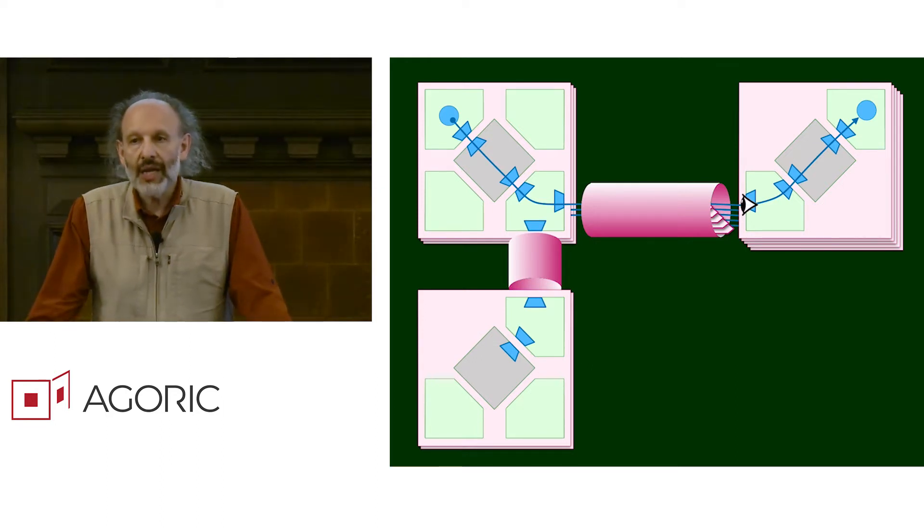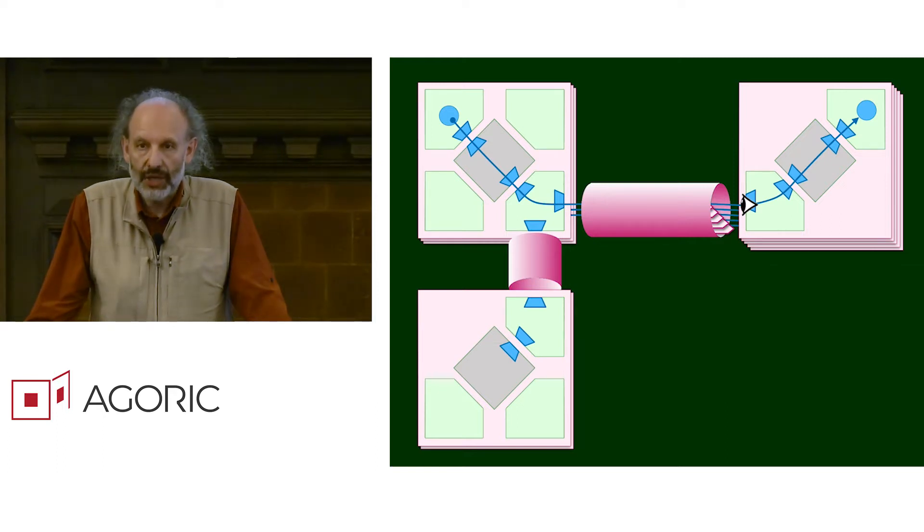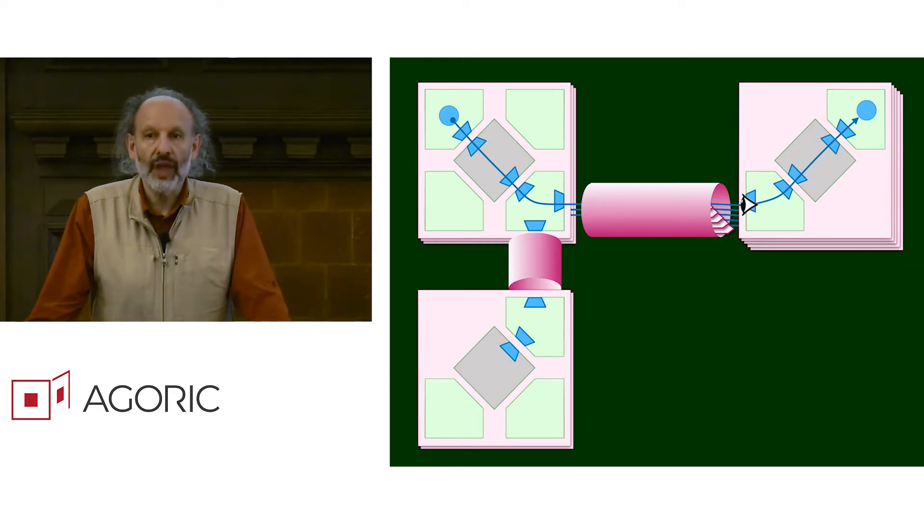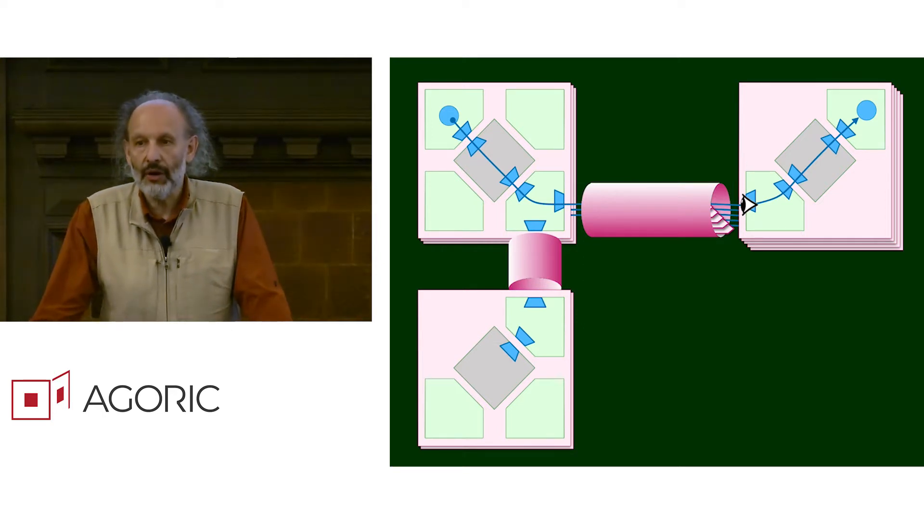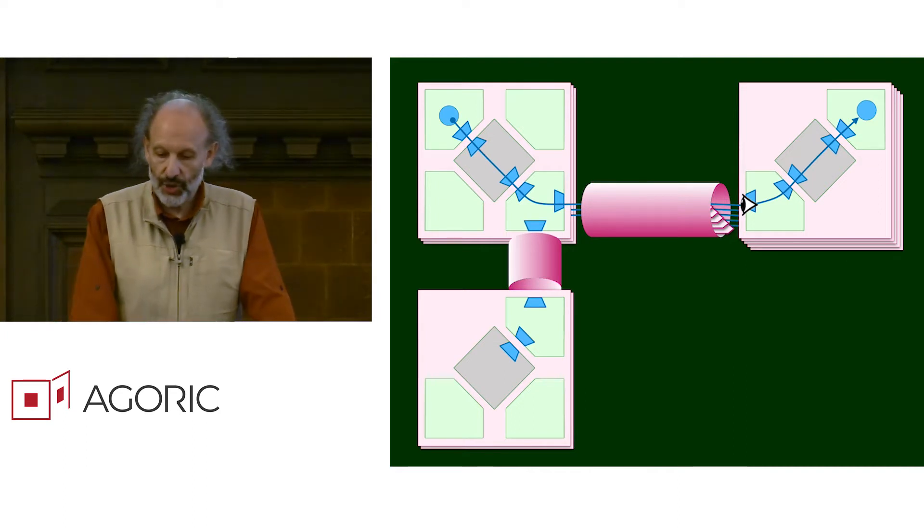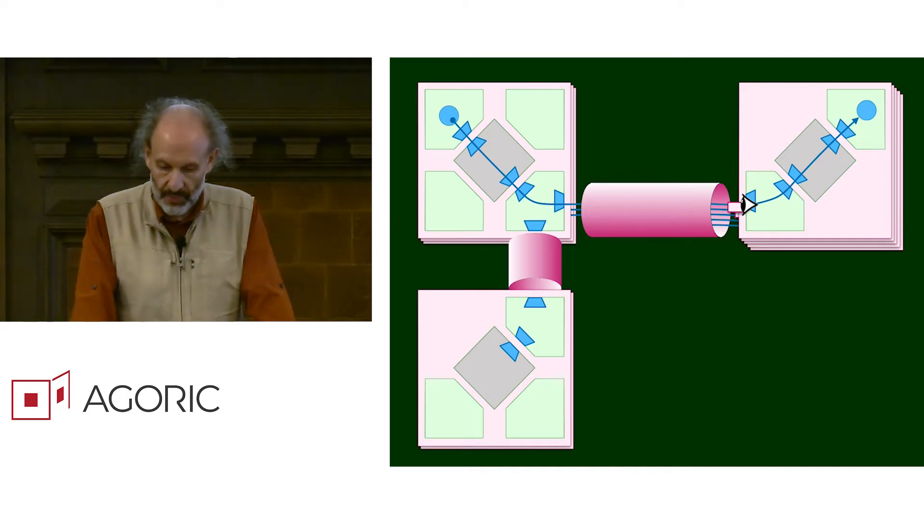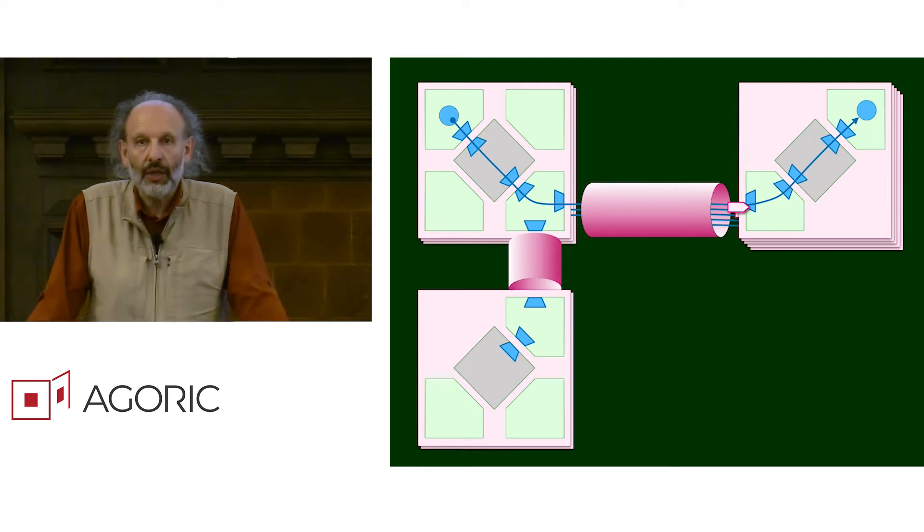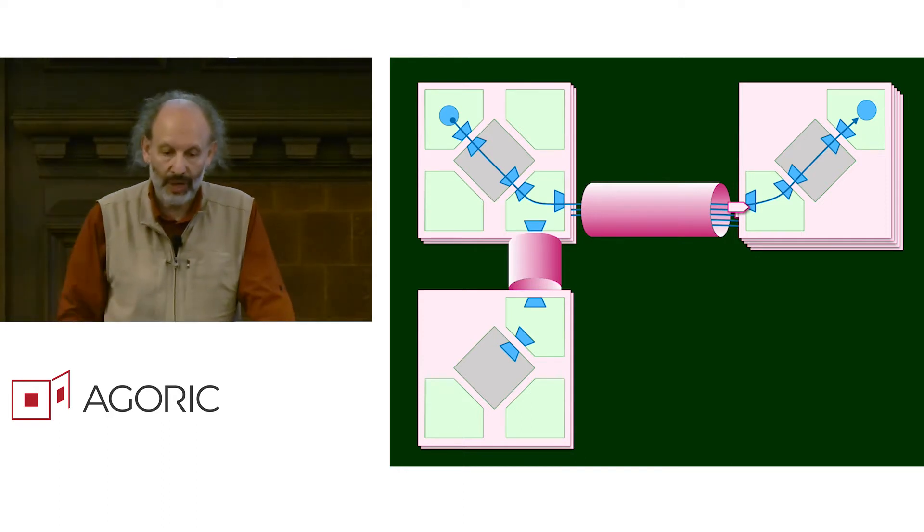So the chain on the right uses the light client logic of the chain on the left in order to validate that messages that the relayer claims are from the chain on the left. Having validated that, those messages can now proceed into the swing set and turn into object messages.